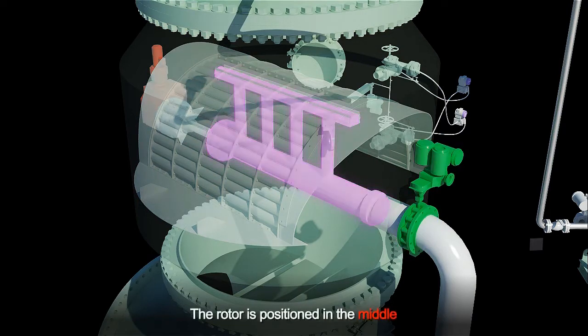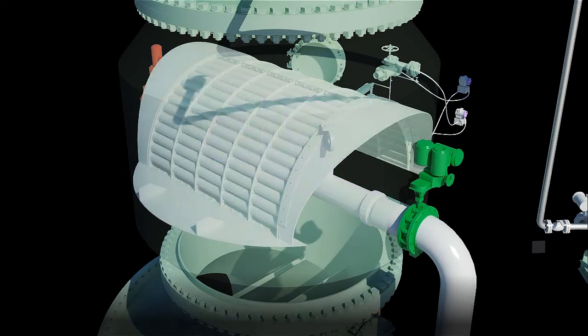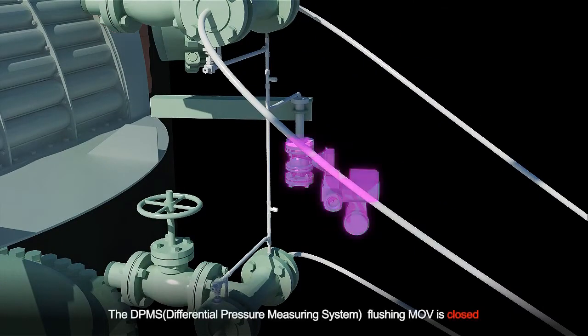The rotor is positioned in the middle. The DP-MS flushing MOV is closed.